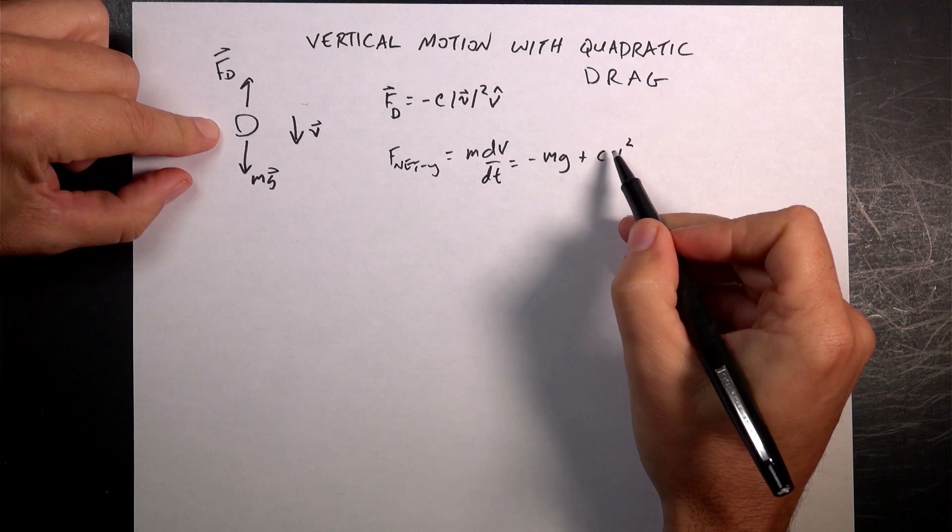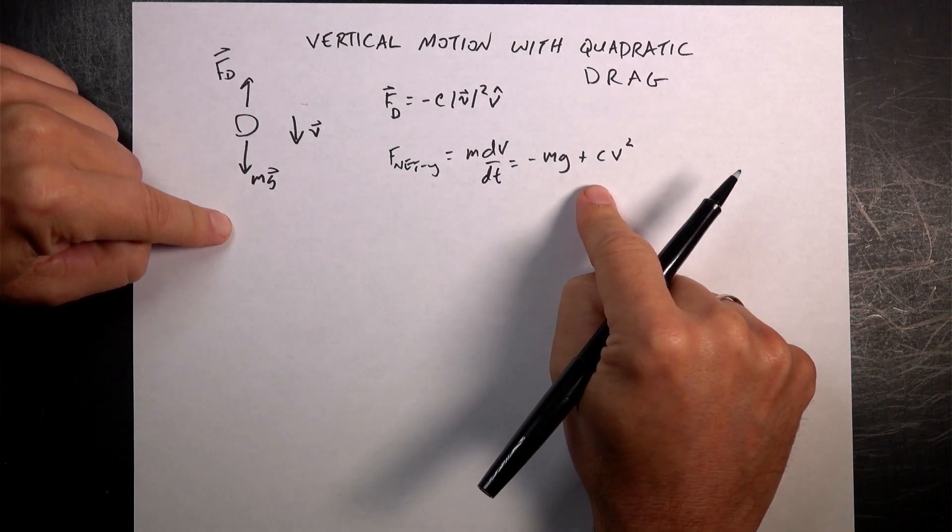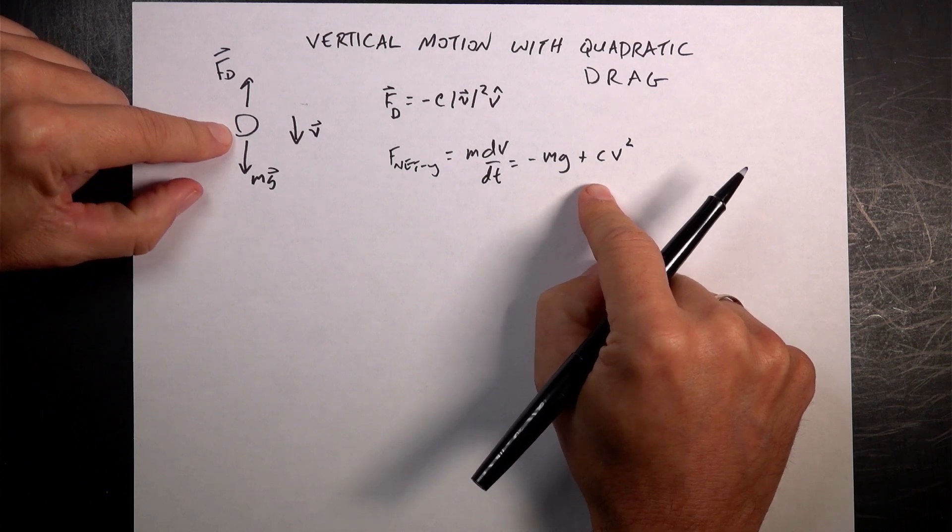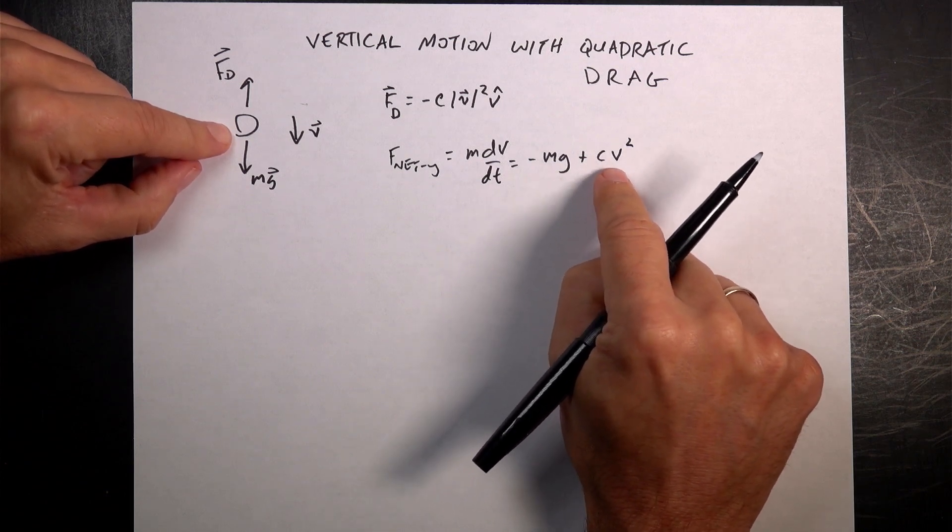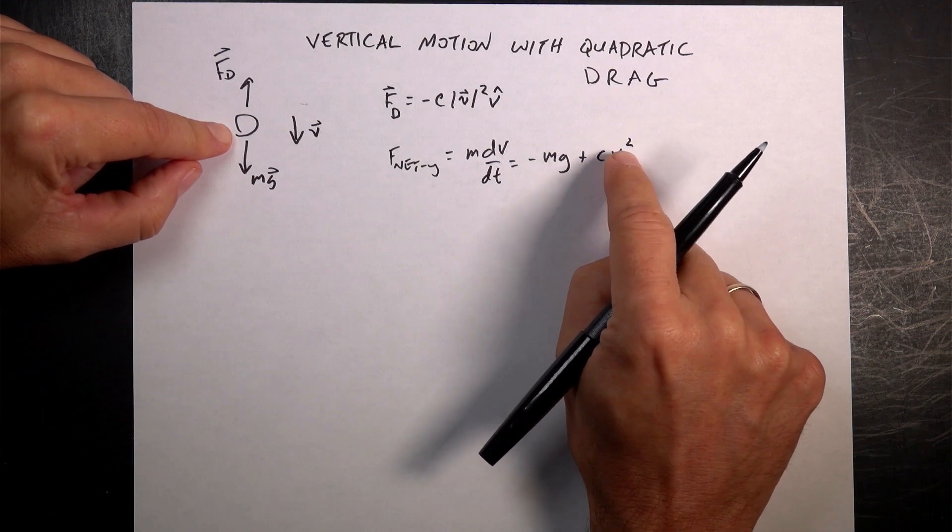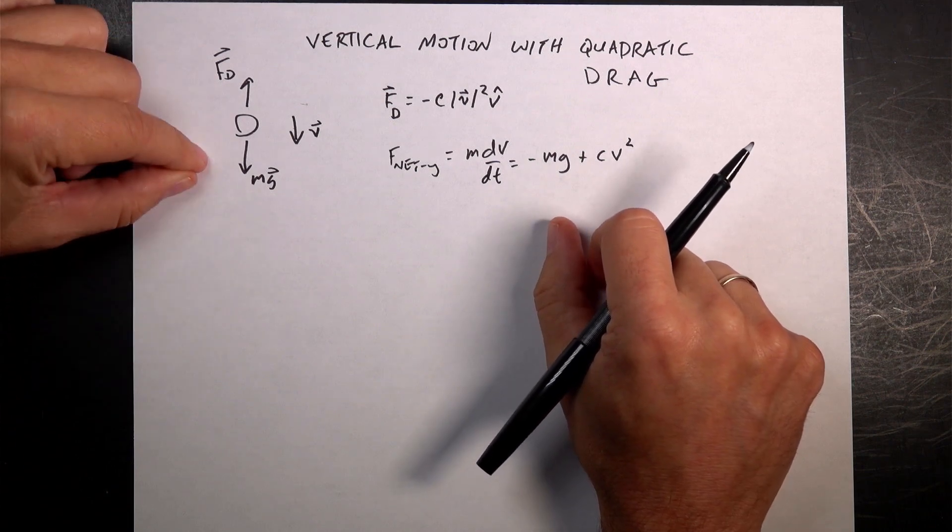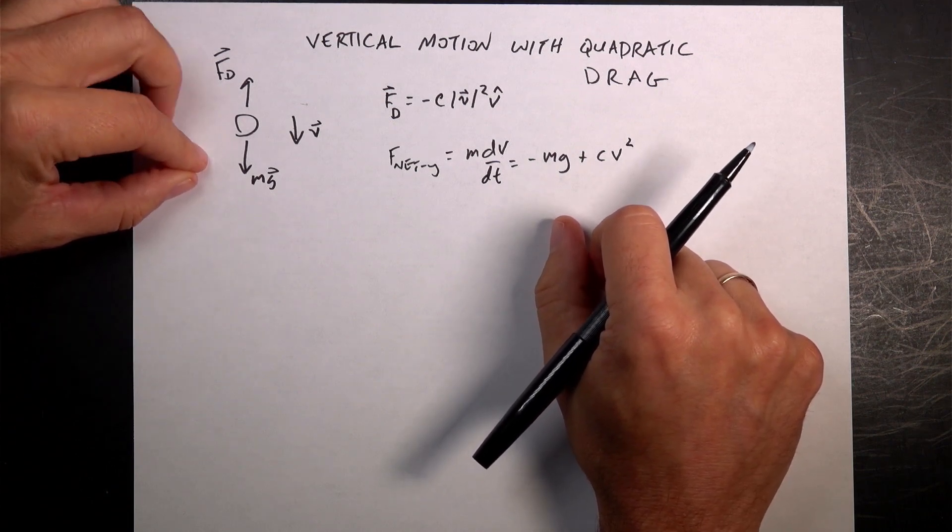And then the forces are going to be negative mg plus cv squared. So here, it's important to notice that I'm only dealing with a falling object. If you have an object that goes up and then comes back down, it's going to be more complicated, because the direction here will change, but the direction, the magnitude of the velocity is always positive c squared. So it can get tricky. So that's why I'm going to just deal with it falling down.